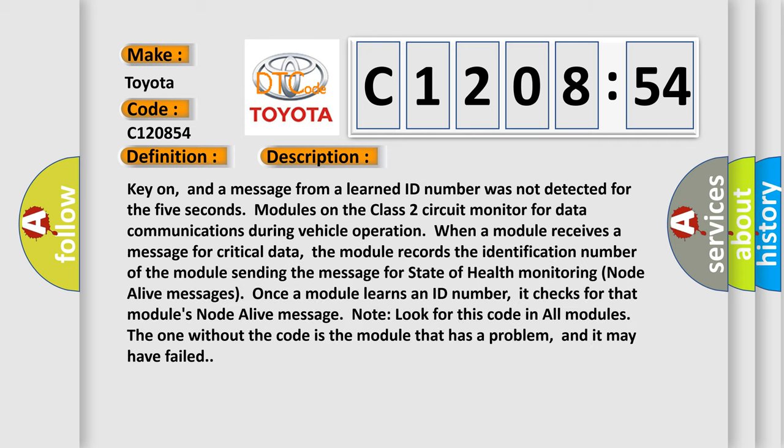Key on, and a message from a learned ID number was not detected for five seconds. Modules on the class 2 circuit monitor for data communications during vehicle operation. When a module receives a message for critical data, the module records the identification number of the module sending the message for state of health monitoring node alive messages.